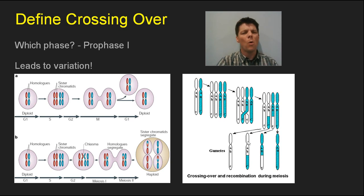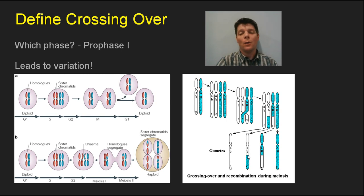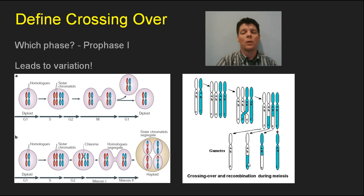How does crossing over lead to more genetic variation? Let's say this chromosome wound up in an egg cell, that egg was fertilized by a sperm, and eventually became a child. That child inherited this chromosome from their mom. The little a, little b, and capital C genes actually came from both the mother's mom — the white part of the chromosome — and the mother's dad — the blue part. This is essentially a way of adding more shuffling to the genetic card deck.